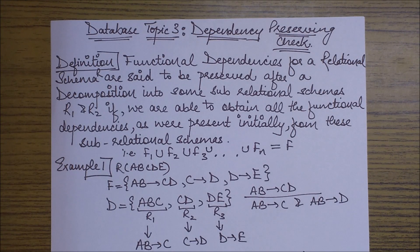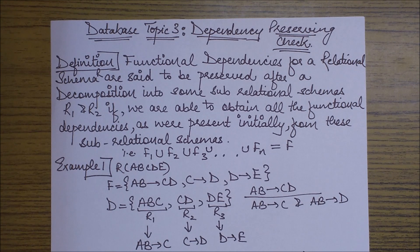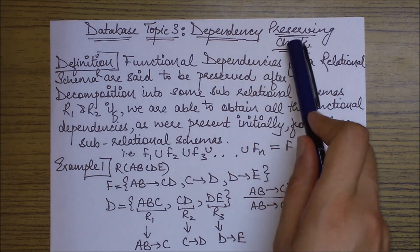Hello friends. In this session we will be discussing a very important topic which is the dependency preserving check, which is always applied after performing normalization. After performing each and every level of normalization we always perform two important checks: first is lossless decomposition, and second is checking whether the decomposition is dependency preserving or not. The lossless decomposition has already been covered in the previous video, and in this session we will be dealing with the dependency preserving check.